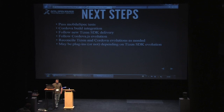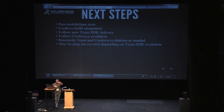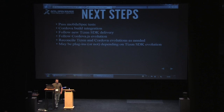What are the next steps? First, we will have to fully pass the mobile spec test. We want to integrate the Cordova build — like the PhoneGap build system. We are going to follow the new Tizen SDK delivery; the next delivery is planned in fall, so it is very soon. We are going to follow Cordova evolutions, particularly versioning, and reconcile Tizen and Cordova evolutions as needed, since we are in the middle between Cordova and Tizen. And in the next version of the SDK, we may have native plugins support to add on to the port that we did.